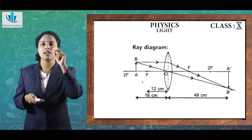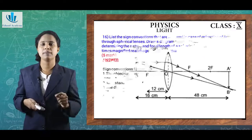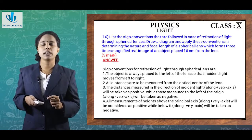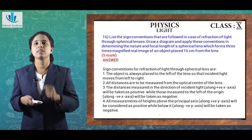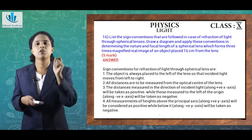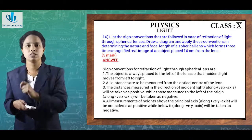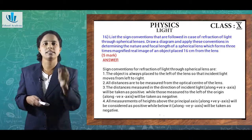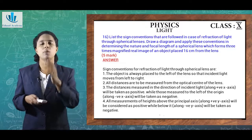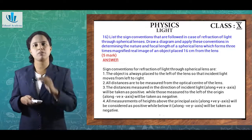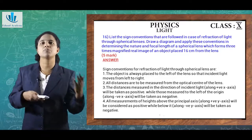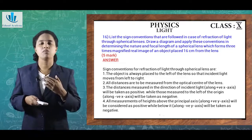For the numerical: a three-times magnified image is formed of an object placed 60 cm from the lens. The object is on the left, so u = −60 cm, and since we have a three-times magnified image, the magnification value needs to be applied accordingly.